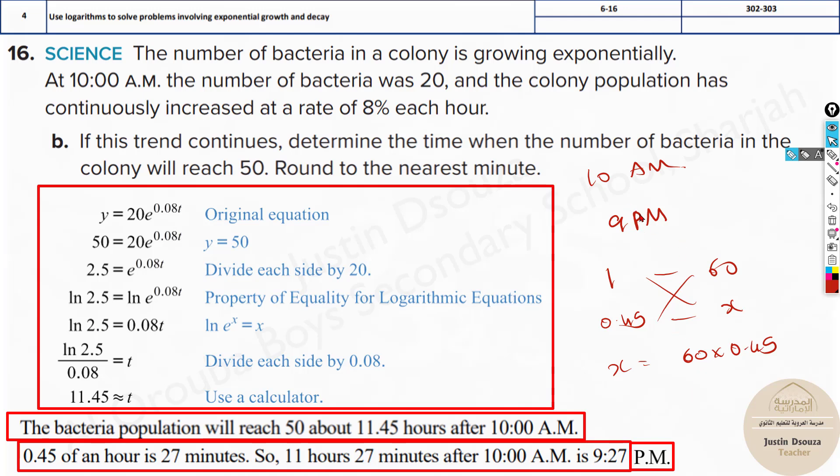So it is 9:27. Just in the calculator, you will get 27 minutes. So it will be 9:27 p.m. That's the answer. At 10 a.m. there are only 20 bacteria. To reach 50 bacteria, you need 11 and a half hours. So just add 11 and that 27 minutes to this. It will be 9:27 p.m. That is the end of this topic.